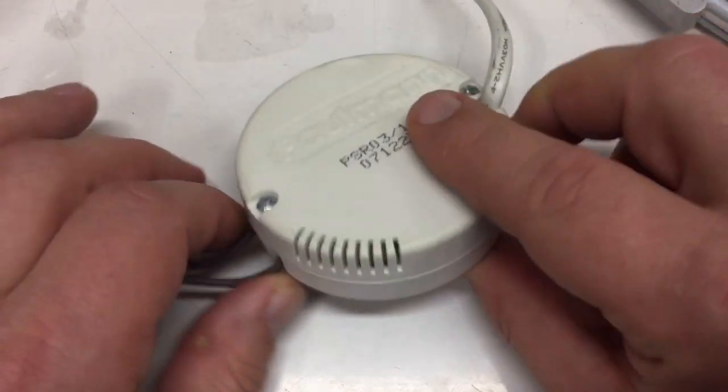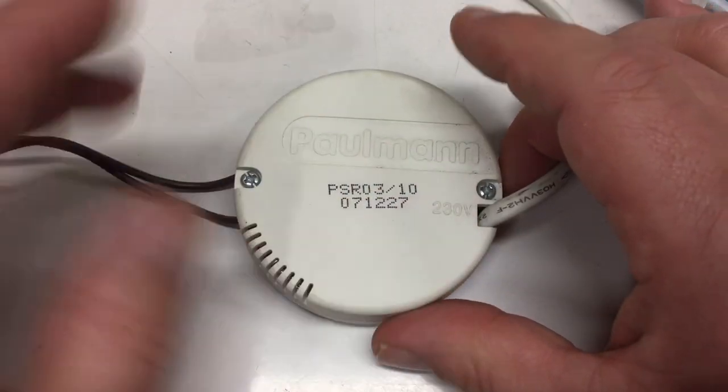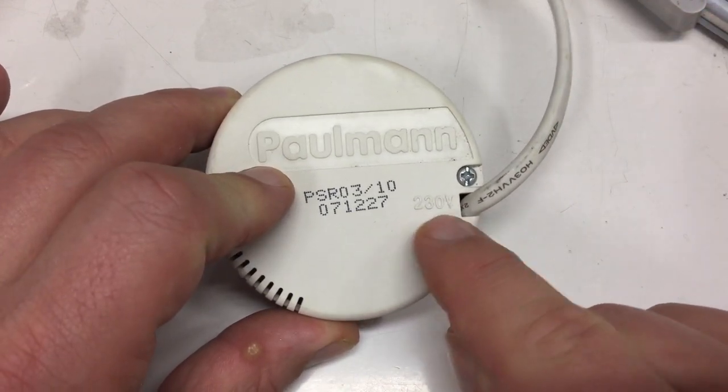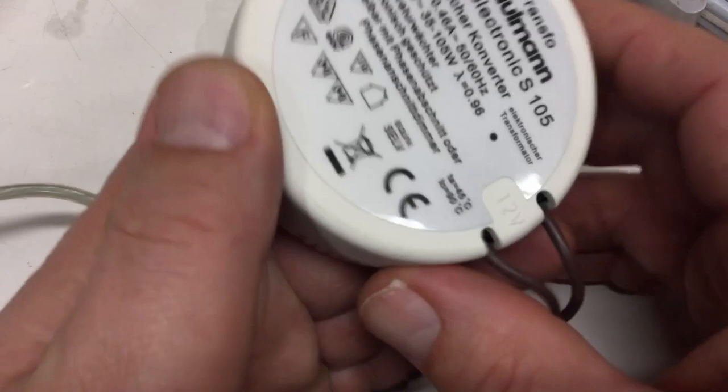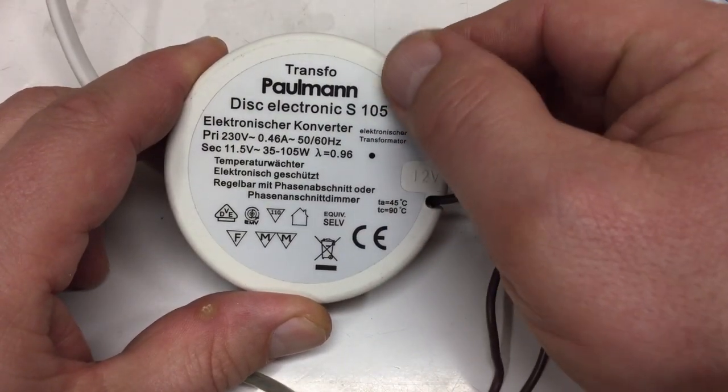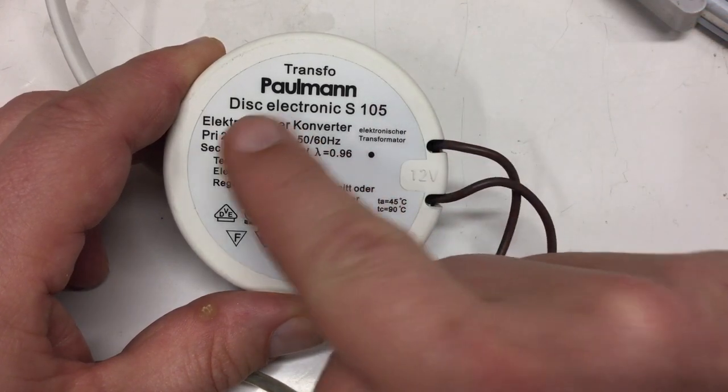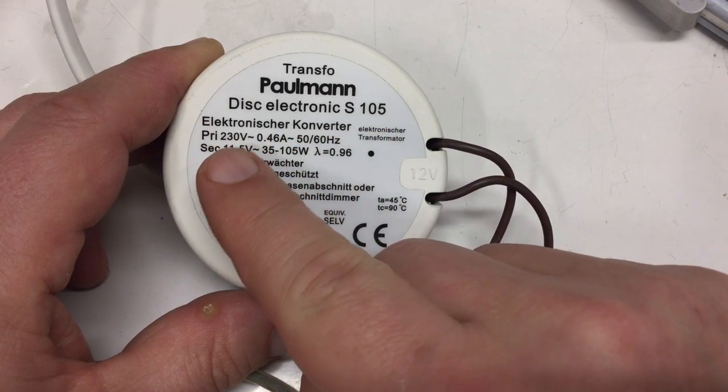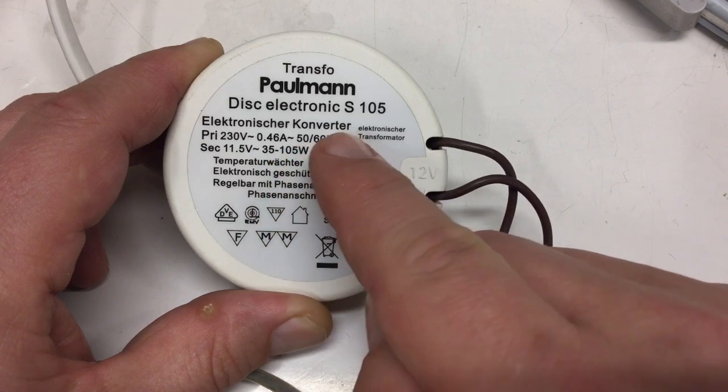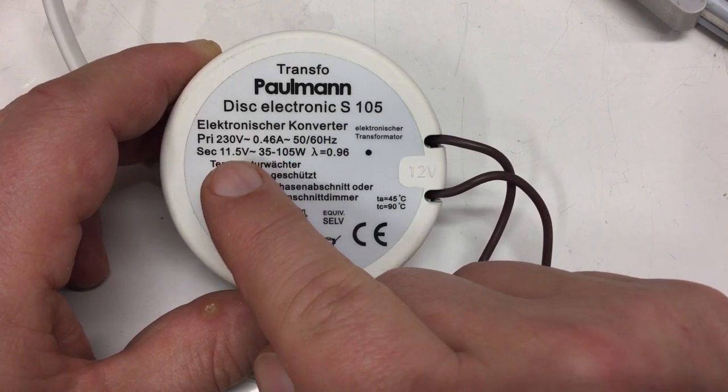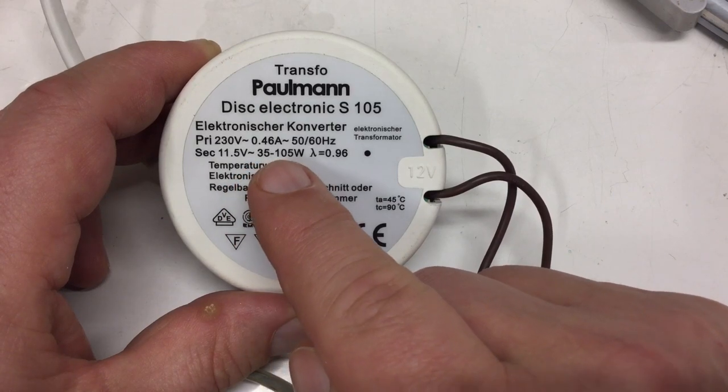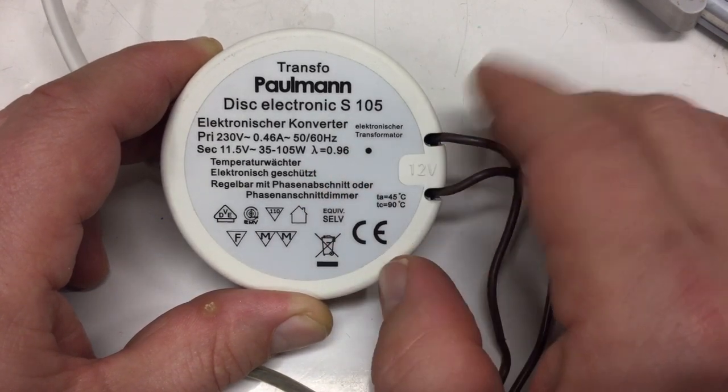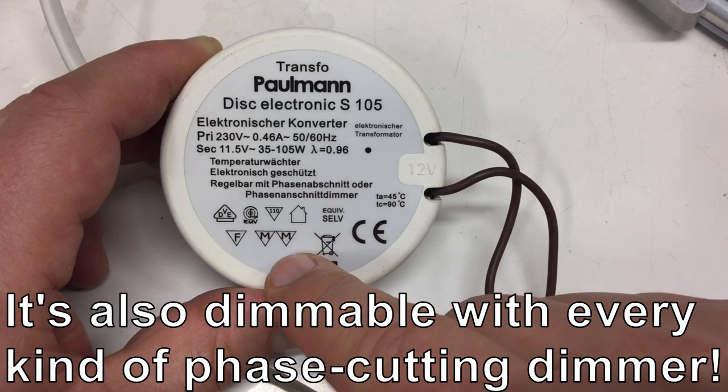That switch mode power supply is really not that big. And it seems to be made in Germany, or at least Europe. 230 volts, that's a sign it's made in Europe, not 220 volts. Transfo, Paulmann. Disc electronic S105, electronic converter. Primary 230 volts, 0.46 amps, 50 or 60 hertz. Secondary 11.5 volts, 35 to 105 watts. Power factor 0.96.